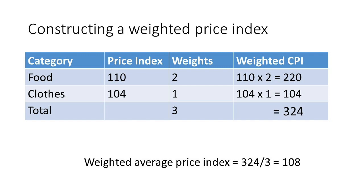If we now add weights, we'll pretend that households are spending twice as much on food as on clothes. So we give food a weighting of 2 and clothes a weighting of 1, reflecting that households spend more on food. To calculate the weighted CPI, we multiply the price index by the number of weights: 110 times 2 equals 220, and 104 times 1 equals 104.